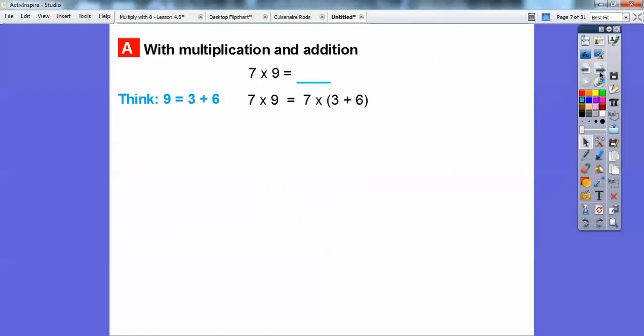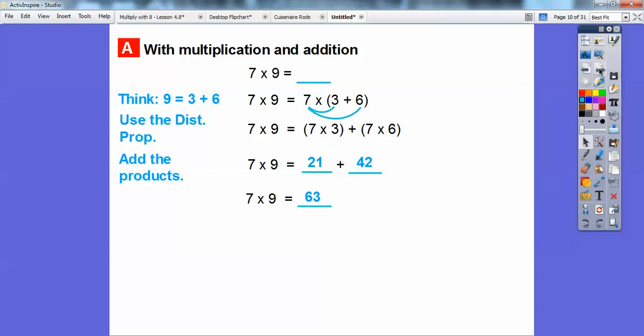And then let me move that up. And then we'll just use the distributive property right there. We do seven times three plus seven times six right there. Then we multiply those products right there. So seven times three is 21. Seven times six is 42. And then we just go ahead and add those products together and we get 63.